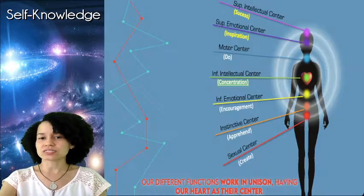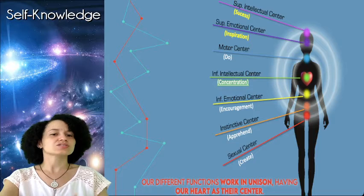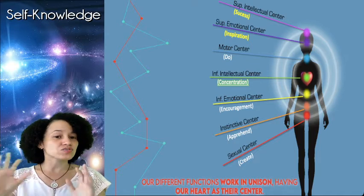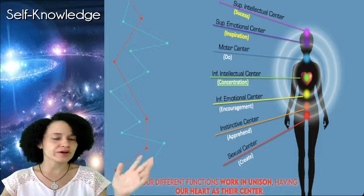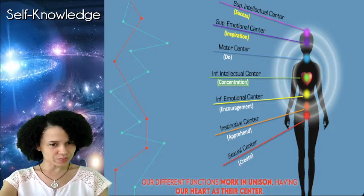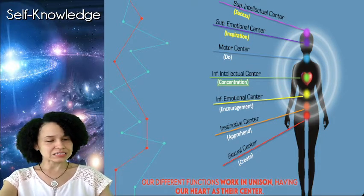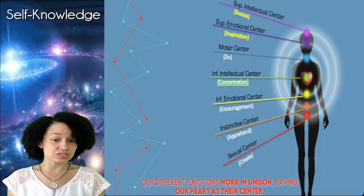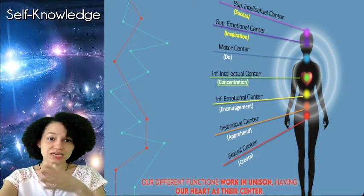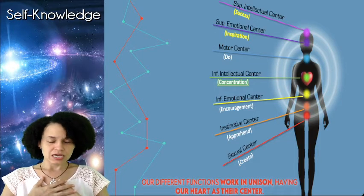We need to understand that concentration, when we learn to live in the present moment — in the eternal now — as consciousness can only manifest in the here and now. When we are distracted we are mentally and emotionally somewhere else or someone else. We manage to be concentrated when we are fully present in a self-awareness state, and our mental, emotional, instinctive, motor, and sexual energies are all working towards the same purpose — our different functions working in unison, having our hearts as the center.